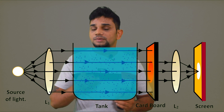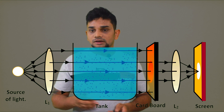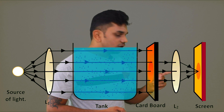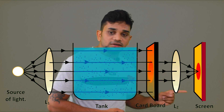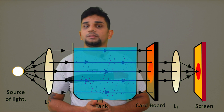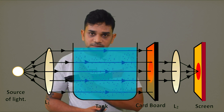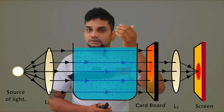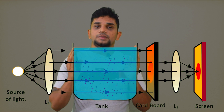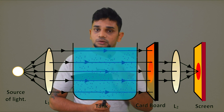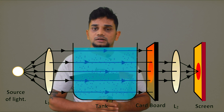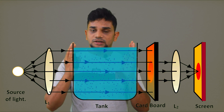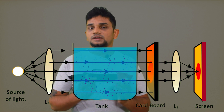Now we can observe the color change. It starts as white light, then changes to orange, and after that to red color. The reason is that when sodium thiosulfate reacts with sulfuric acid, sulfur particles form in the solution. Because of these particles there is scattering, so the transmitted light becomes first orange then red. The solution itself appears blue.